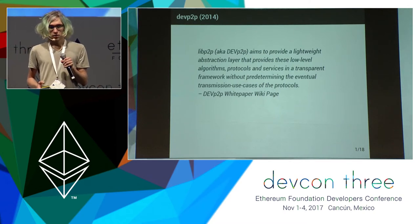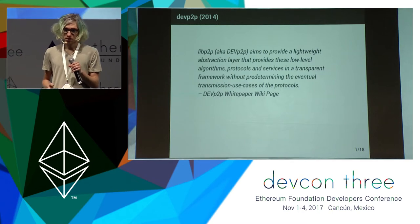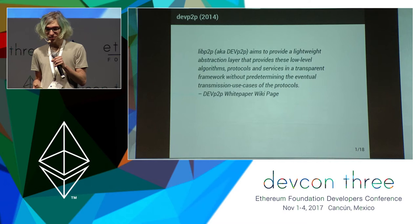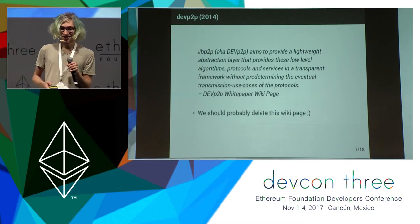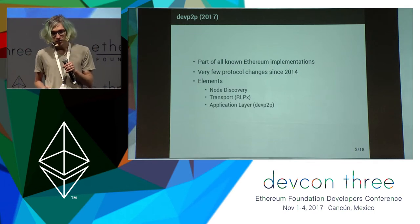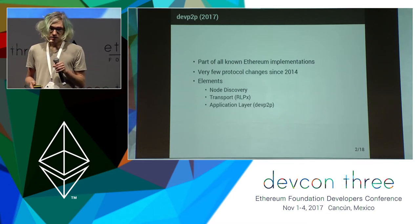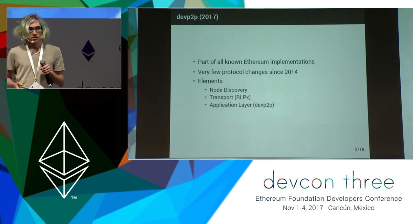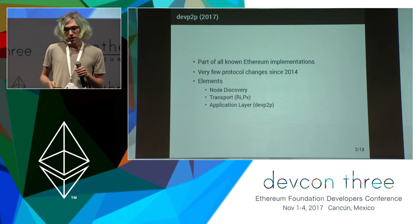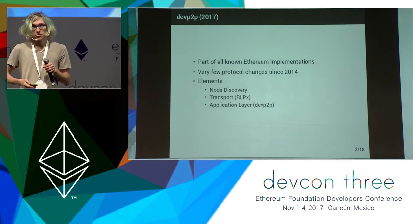DevP2P came into existence about three years ago, and at the time the vision was to provide a lightweight abstraction layer that provides low-level algorithms, protocols, and services in a transparent framework — a pretty grand vision. In 2017 though, DevP2P is just the thing you need to implement to talk to the Ethereum blockchain. It's part of all known Ethereum implementations — all six or seven implementations live on the network — and there have been very few actual protocol changes since 2014, so you could count them on one hand.